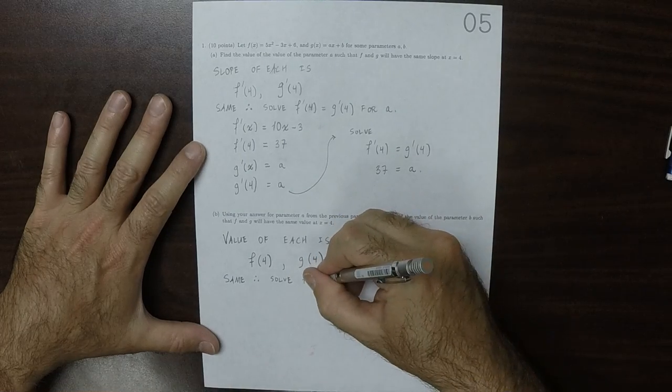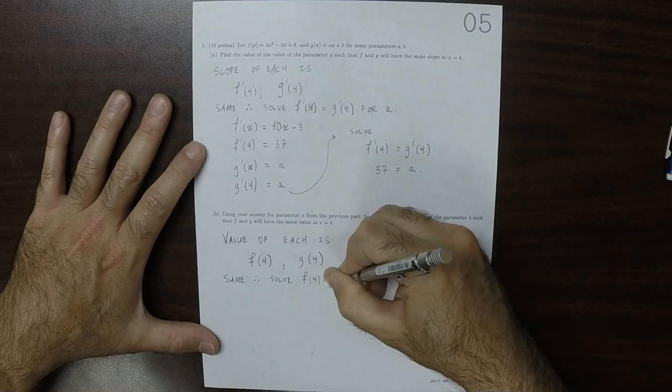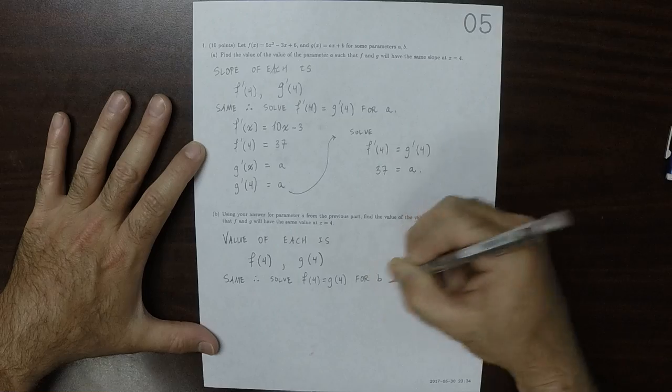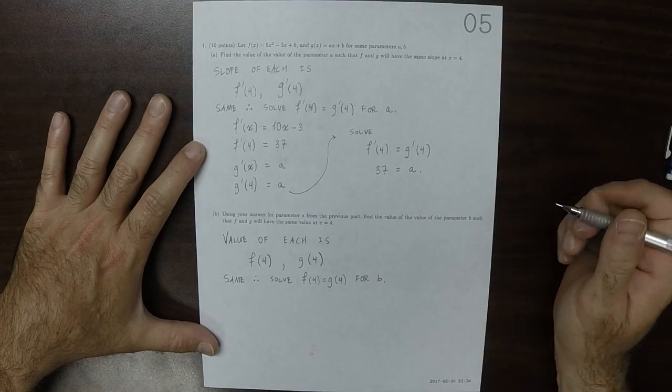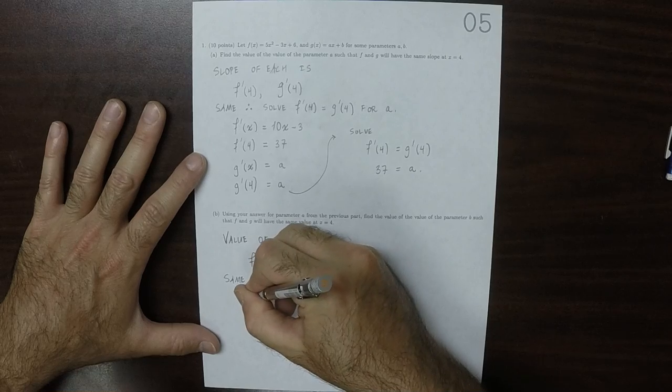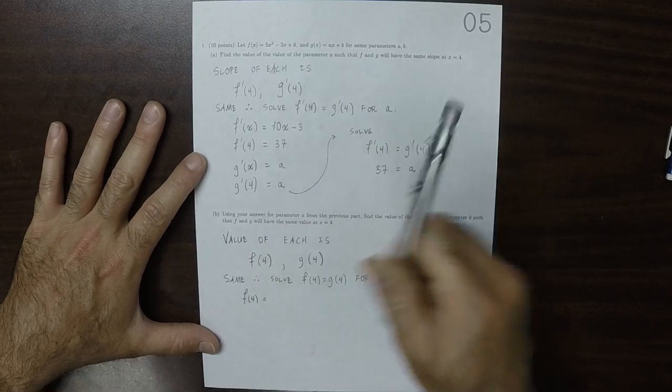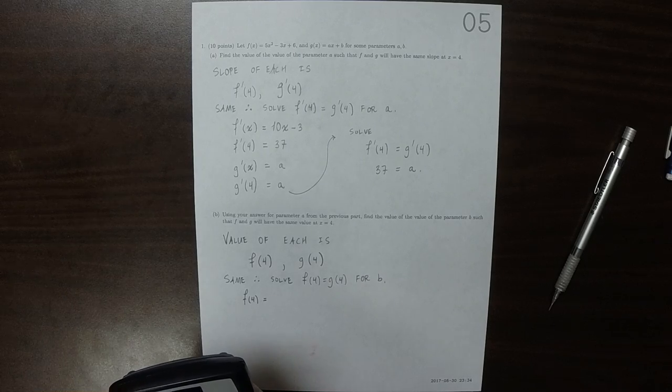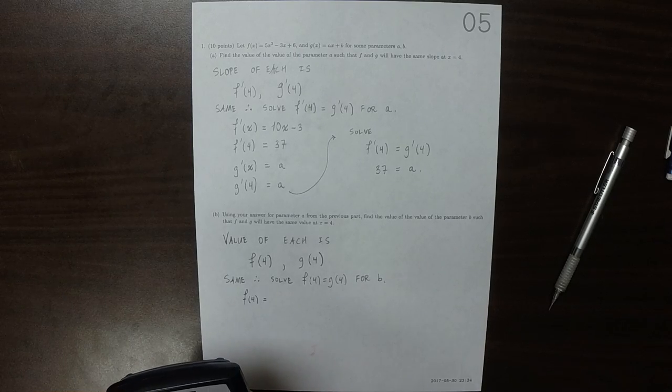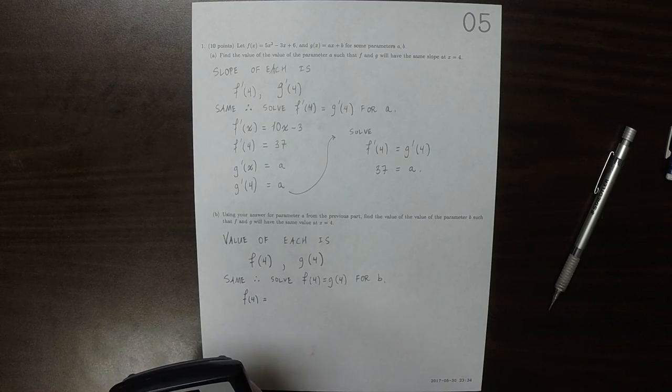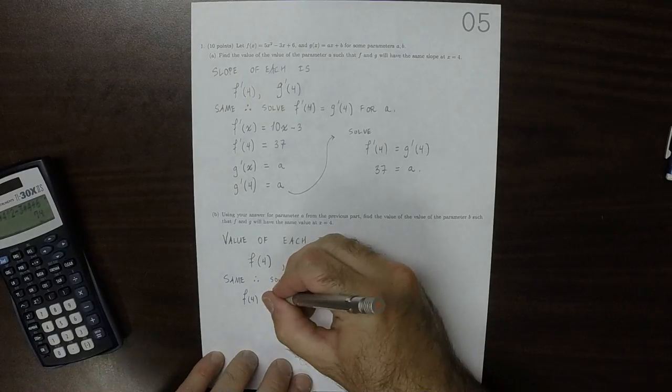So, the function evaluated at 4 is 5 multiplied by 4 squared minus 3 times 4 times 4 plus 6. So that's 74.